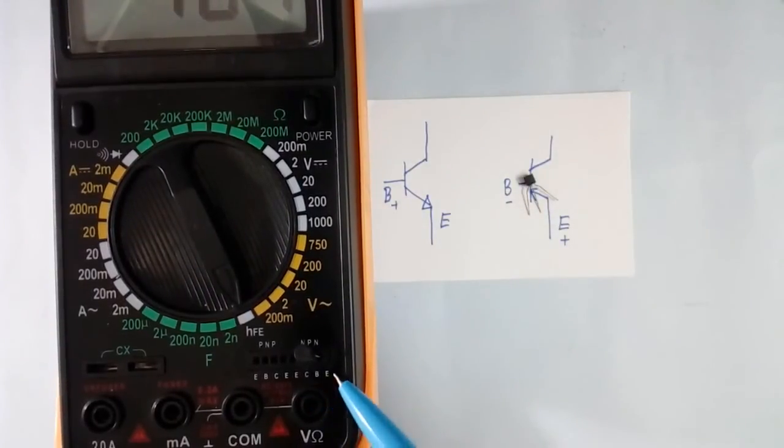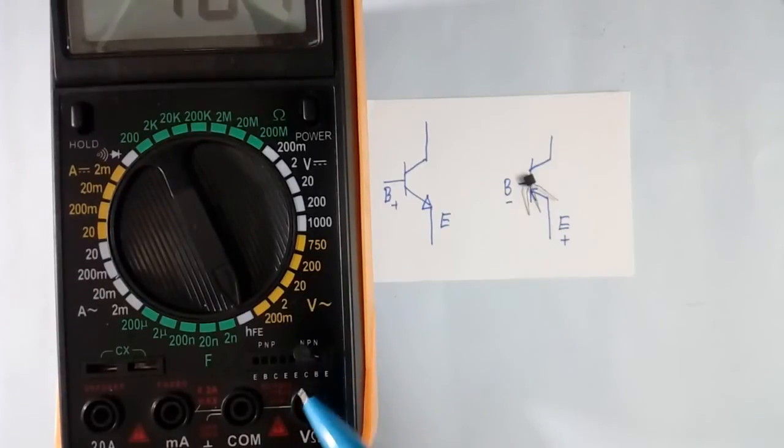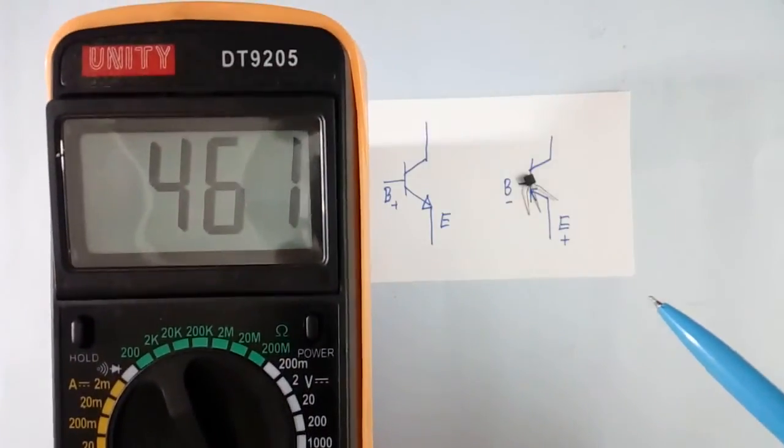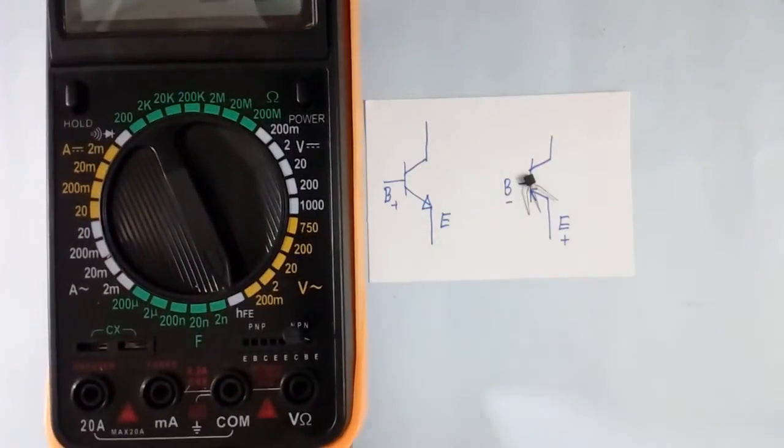And this is collector base emitter. We will connect our transistors. Collector base here. Base emitter like this. It is showing 461. HFE is 461.